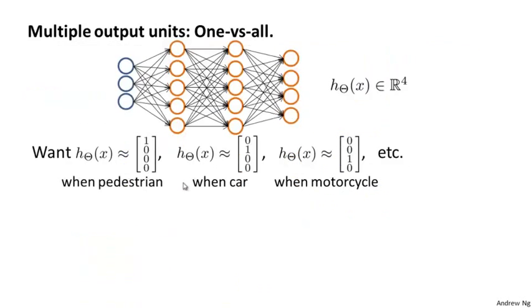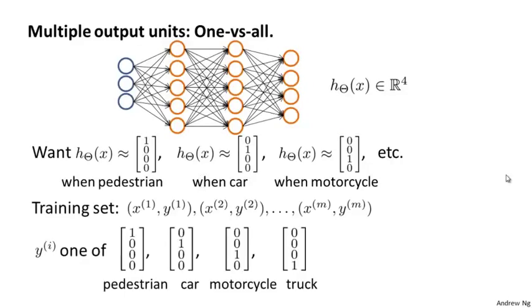So rearranging the slide a bit. Here's our neural network with four output units, and those are what we want each of h(x) to be when we have the different images. And the way we're going to represent the training set in these settings is as follows. When we have a training set with different images of pedestrians, cars, motorcycles, and trucks,